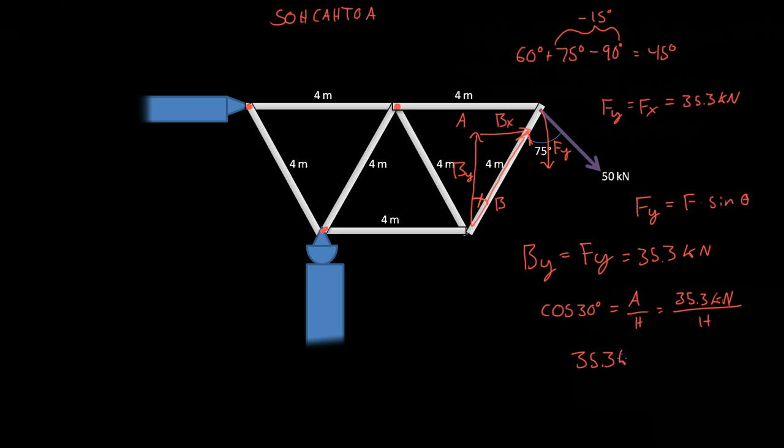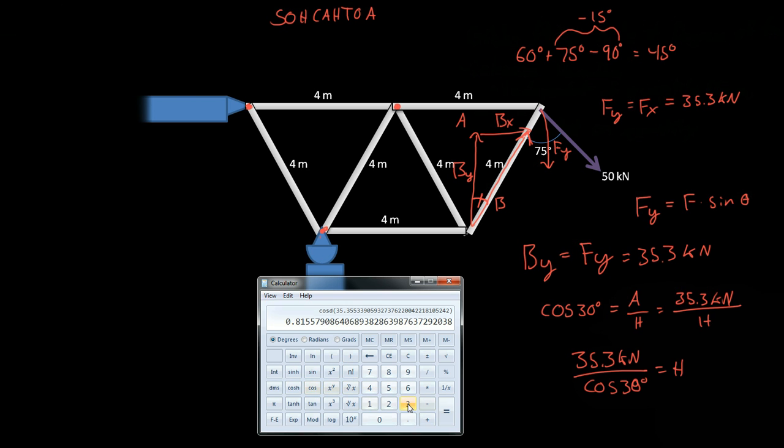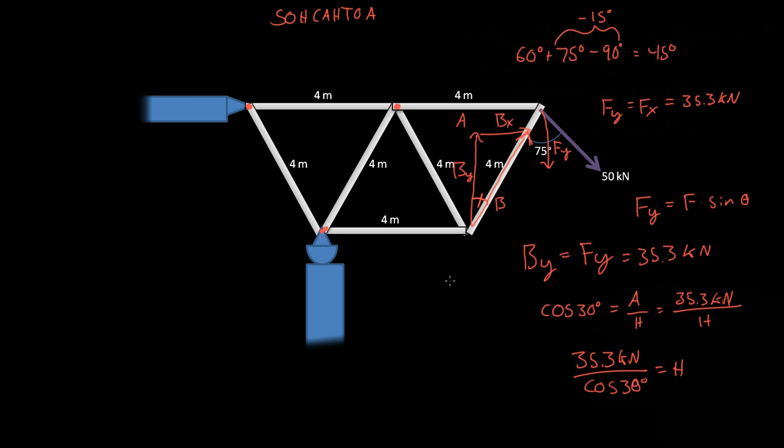must equal the hypotenuse. So, first we'll do the cosine of 30 degrees. So, we have the 35.3 divided by the cosine of 30 degrees. And that is equal to 40.8 kilonewtons. Equal to 40.8 kilonewtons. So we know what H, what B is. So B is equal to 40.8 kilonewtons. And we know what BY is.